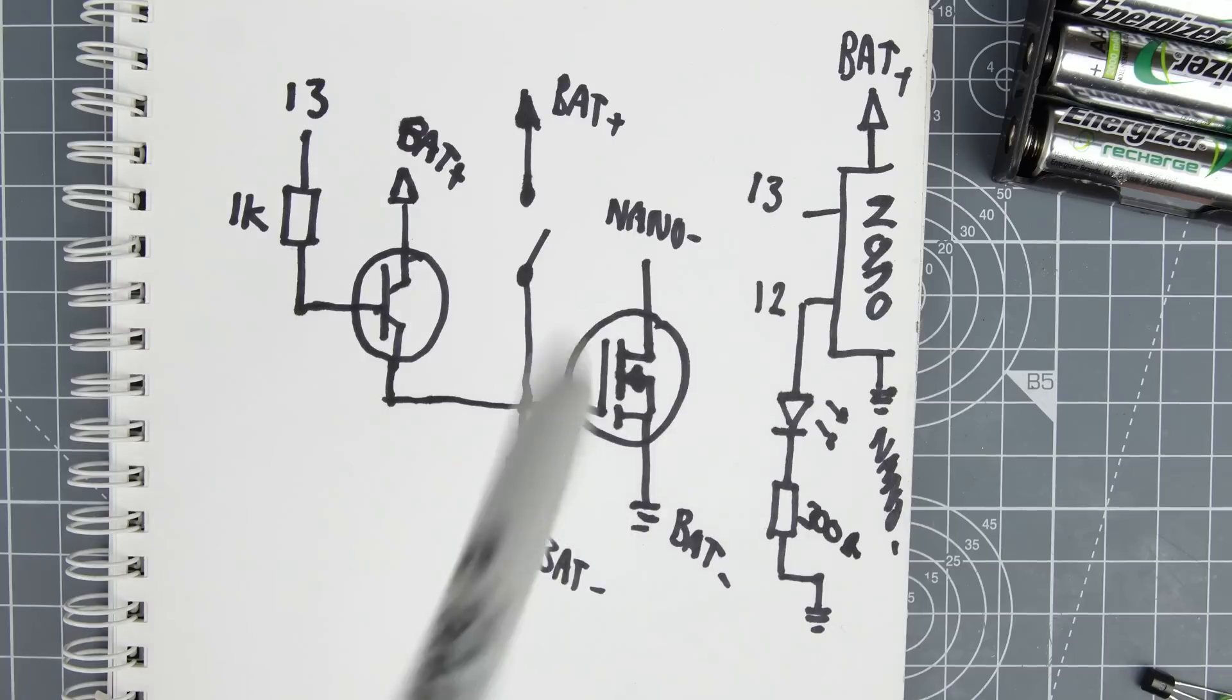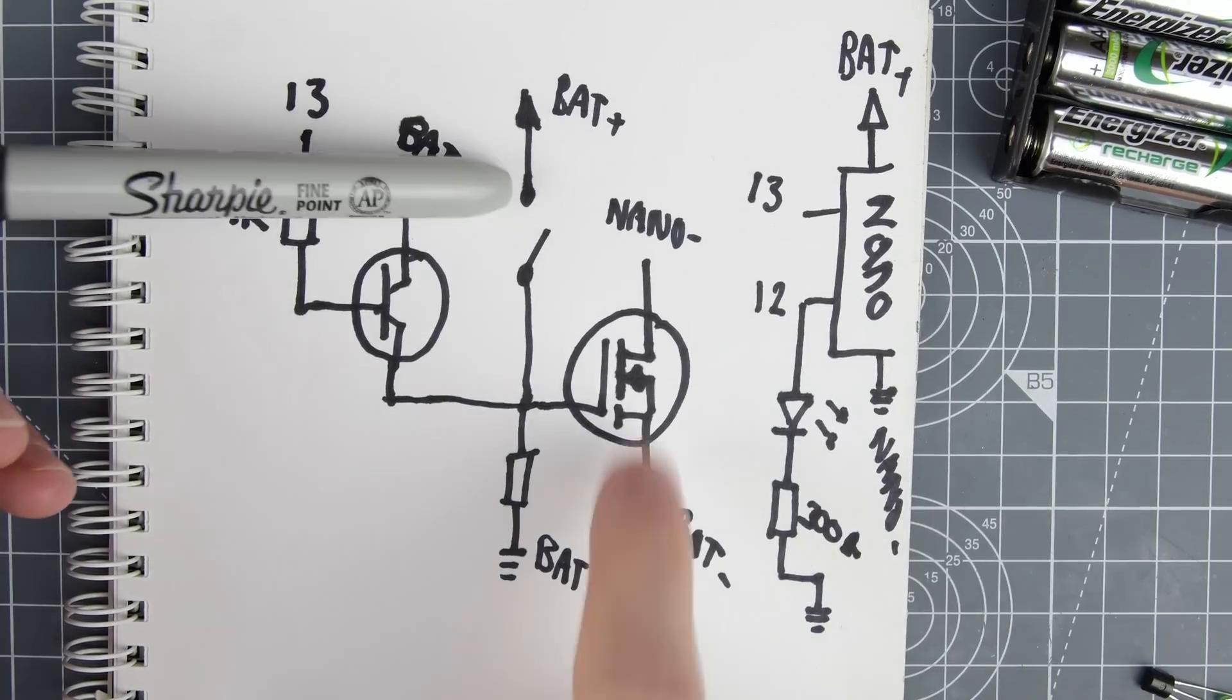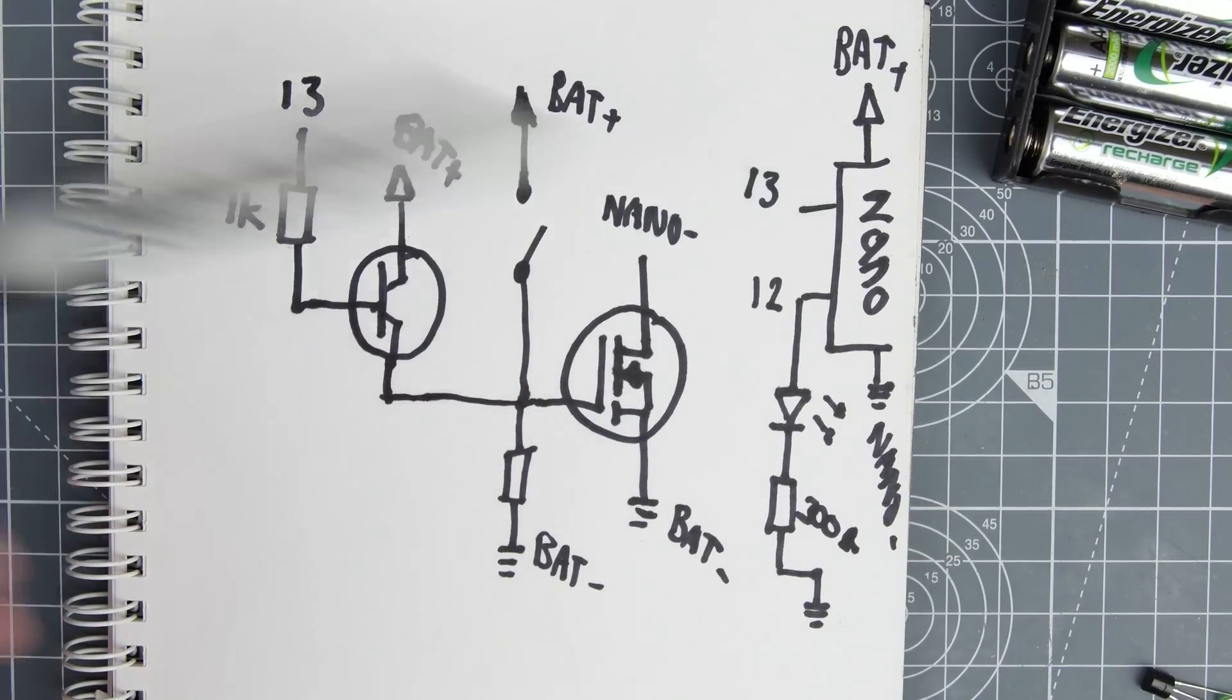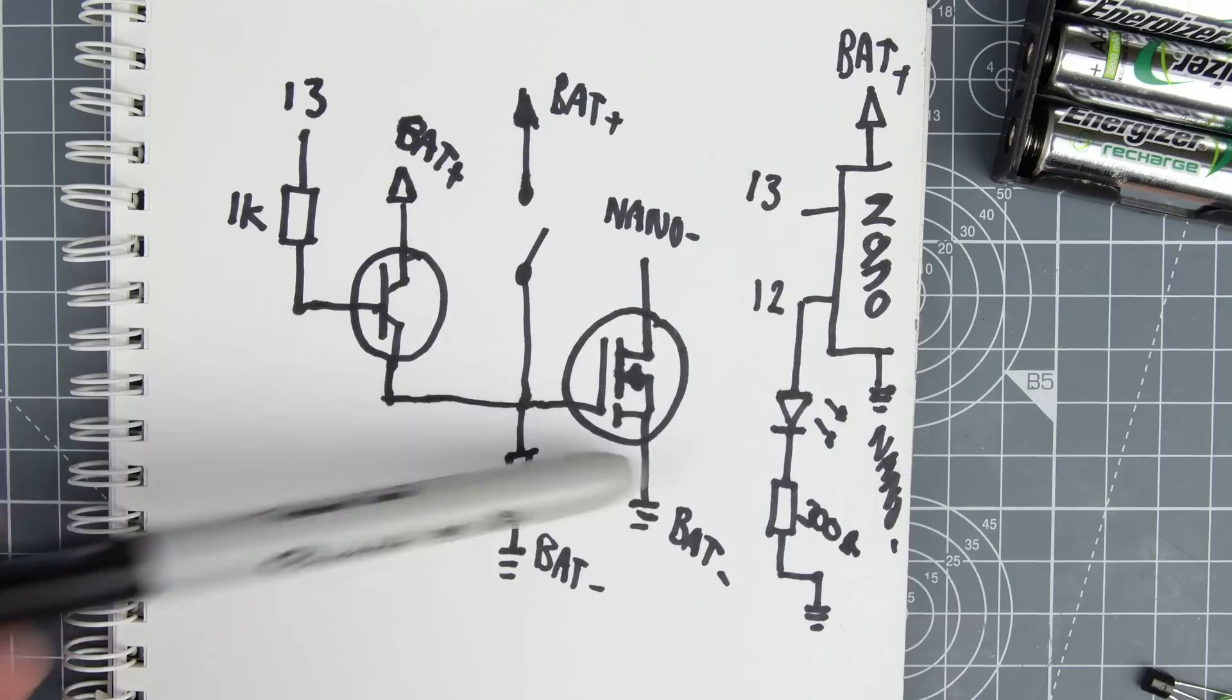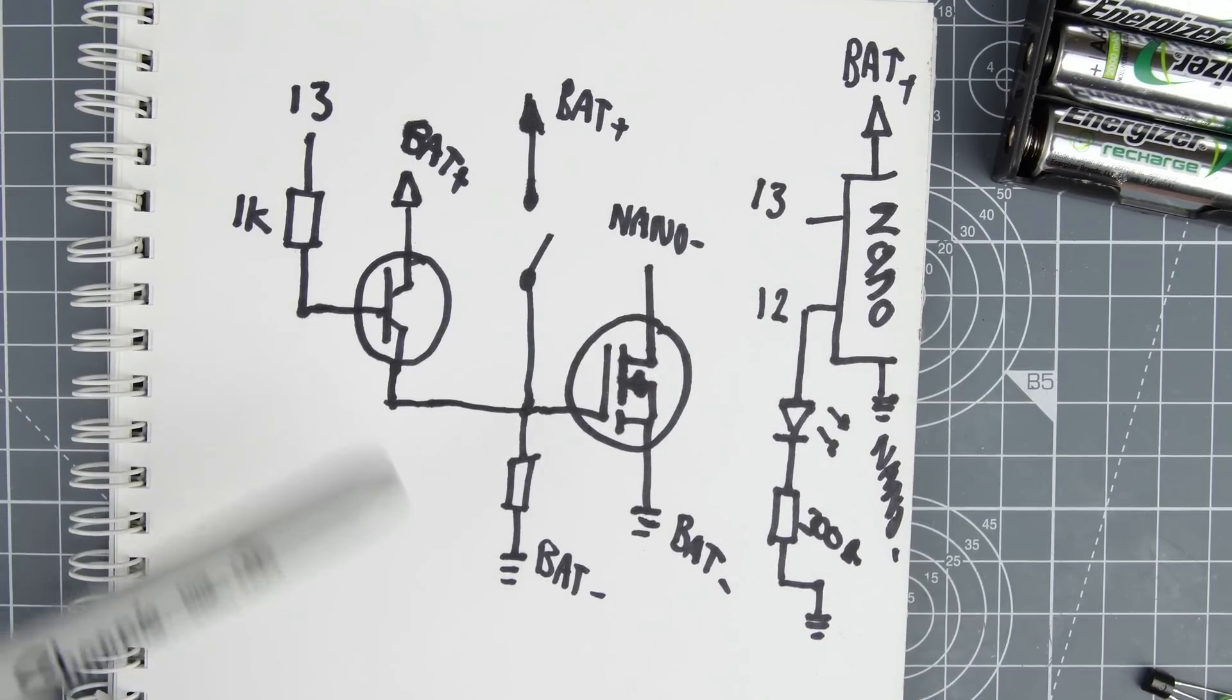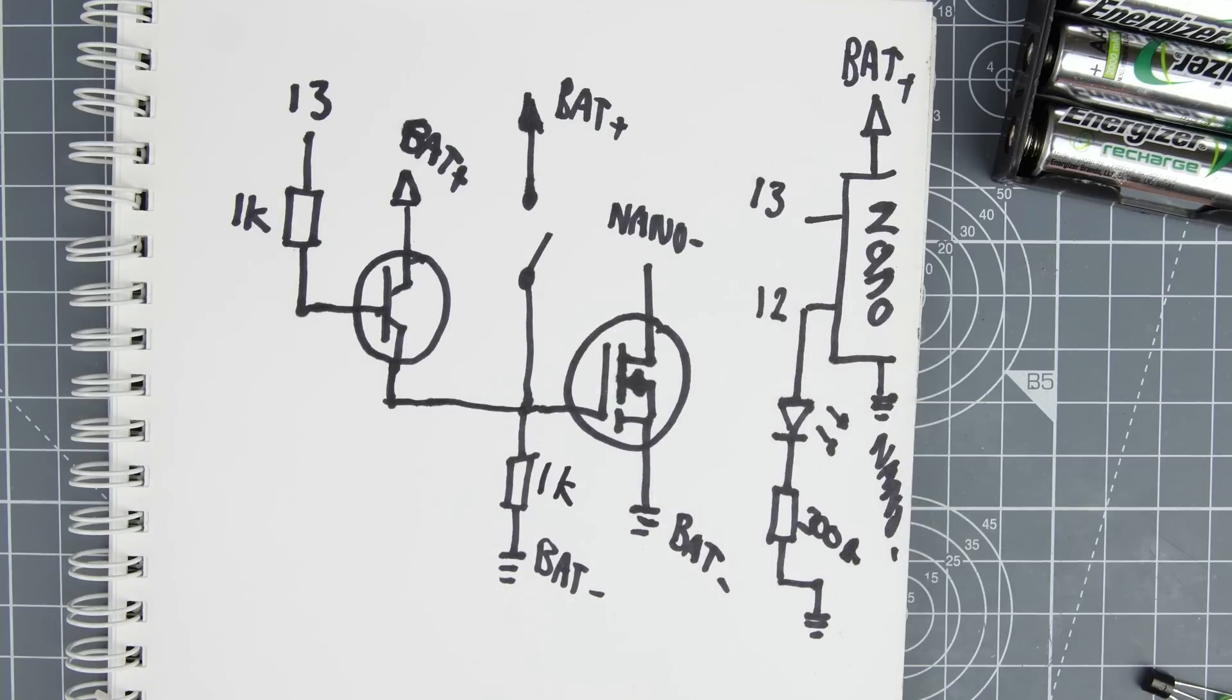So our nano when it boots up will put pin 13 high that will turn on this transistor so when we push this button for the N-channel MOSFET we turn on the MOSFET we enable ground on the nano. The nano is already connected to the battery positive so it should turn on. The nano pin 13 will then hold that signal high keeping the MOSFET on and we'll be flashing this LED so we can see what's happening. And then when the nano decides that it no longer needs to have power or it's completed its task it will turn off pin 13 which then grounds out this MOSFET through this resistor which is 1K. So let's build the circuit and see if it works.